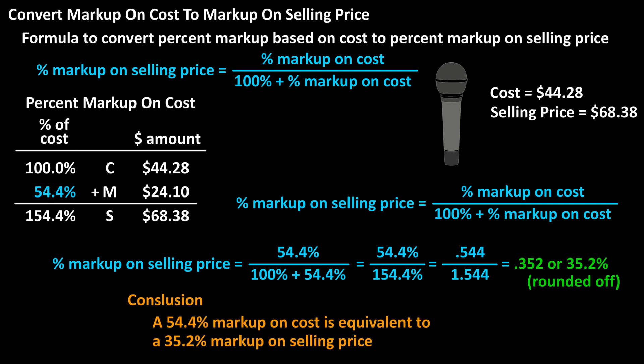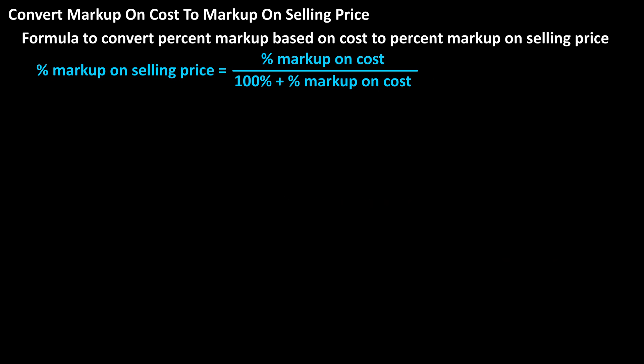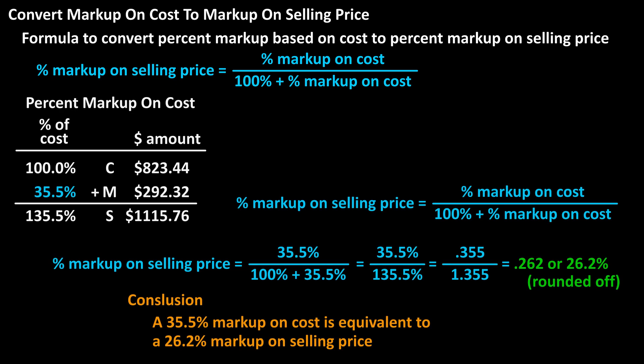So a 54.4% markup based on cost is equivalent to a 35.2% markup on selling price. Here's another example written out on the screen for you.